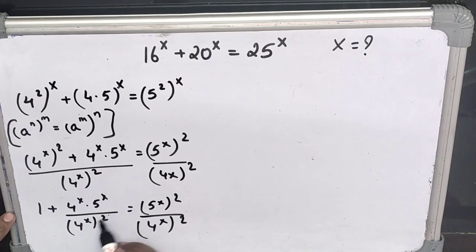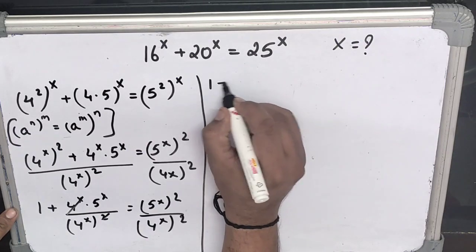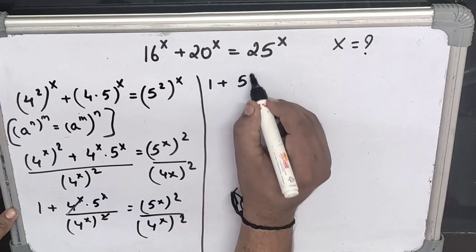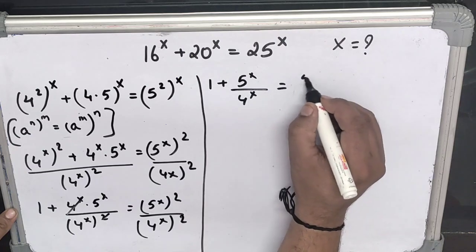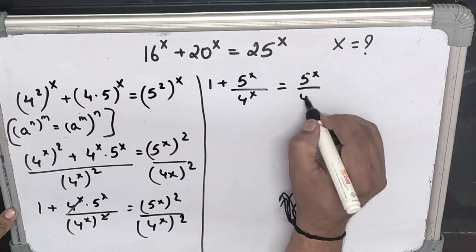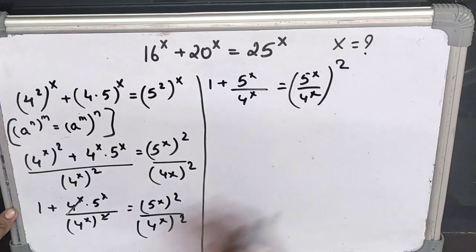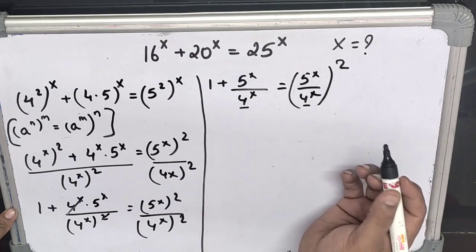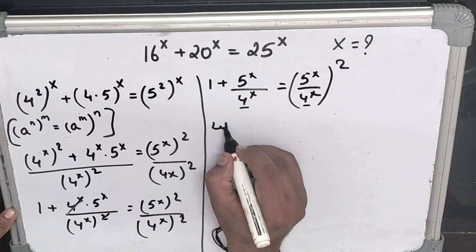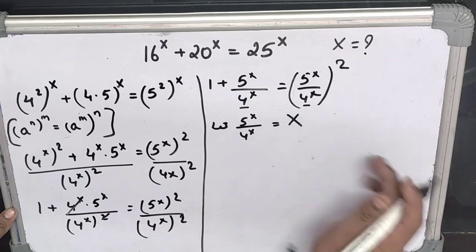Here, the common terms cancel out, and the remaining values give us: 1 plus 5x over 4x equals 5x over 4x, whole to the power 2. Now let 5x over 4x — that is (5/4)^x — equal capital X.